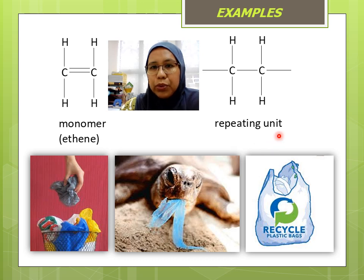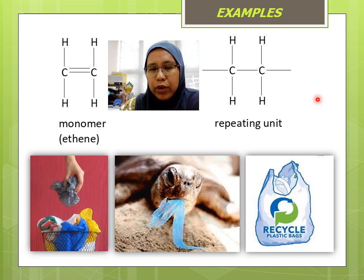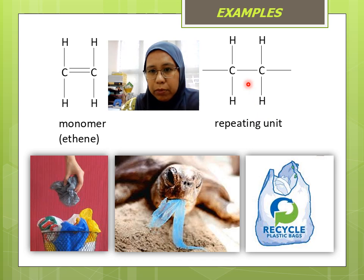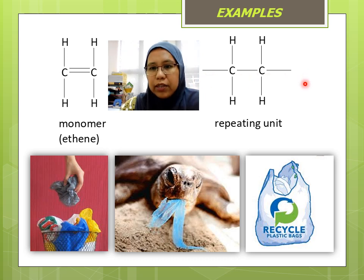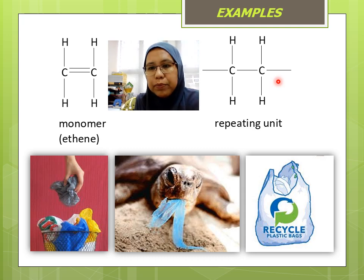For the repeating unit, you don't have to put the bracket or the N. You only need to write the monomer without the double bond, and with a bond before and after to indicate where it will be connected to other monomers.